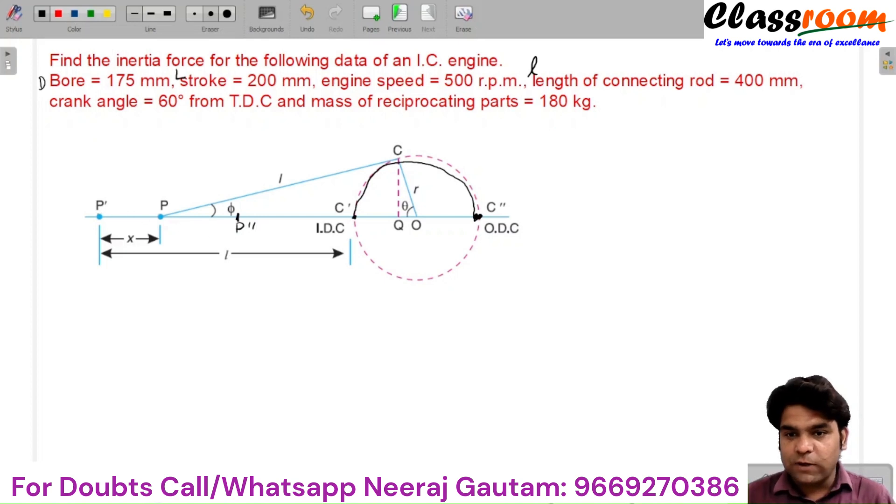So this is the stroke length, and in both the case conditions, the connecting rod is along the line of a stroke. So we can simply say that the stroke length is equal to two times the crank radius, which is given here as 200 mm.